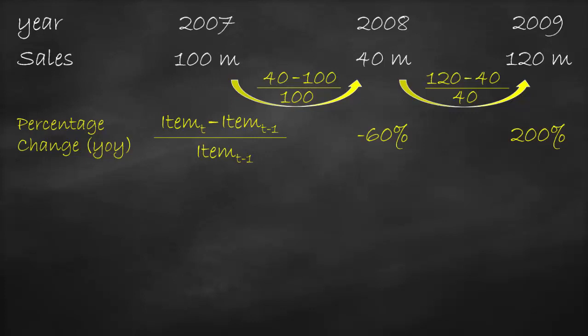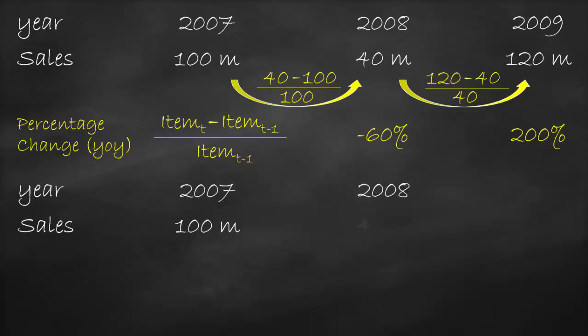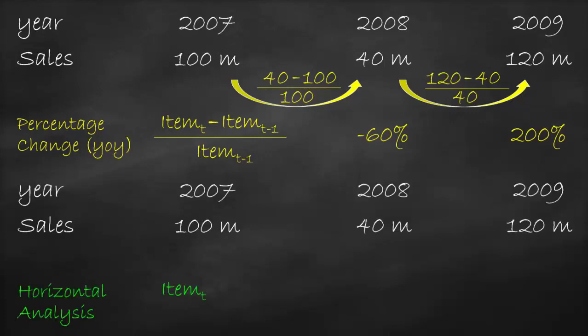The solution is to compare the sales of any year to a fixed year, which we call a base year. This is done in horizontal analysis. To compute horizontal analysis, we use the formula of the value of a certain item at a certain year, minus the value of the same item at the base year, all divided by the value of the same item at the base year.